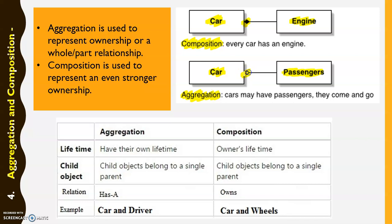The symbol for composition is a solid (filled) diamond, while for aggregation it is just a simple (hollow) diamond. In terms of definition: aggregation is used to represent ownership or a whole-part relationship, while composition is used to represent an even stronger ownership — there is a strong bond between them.